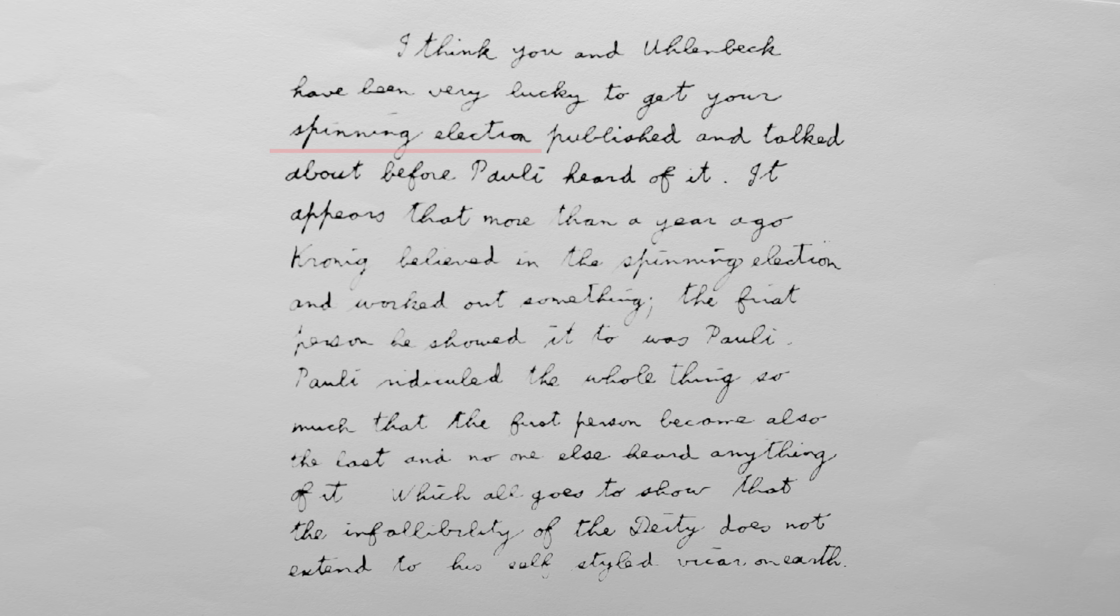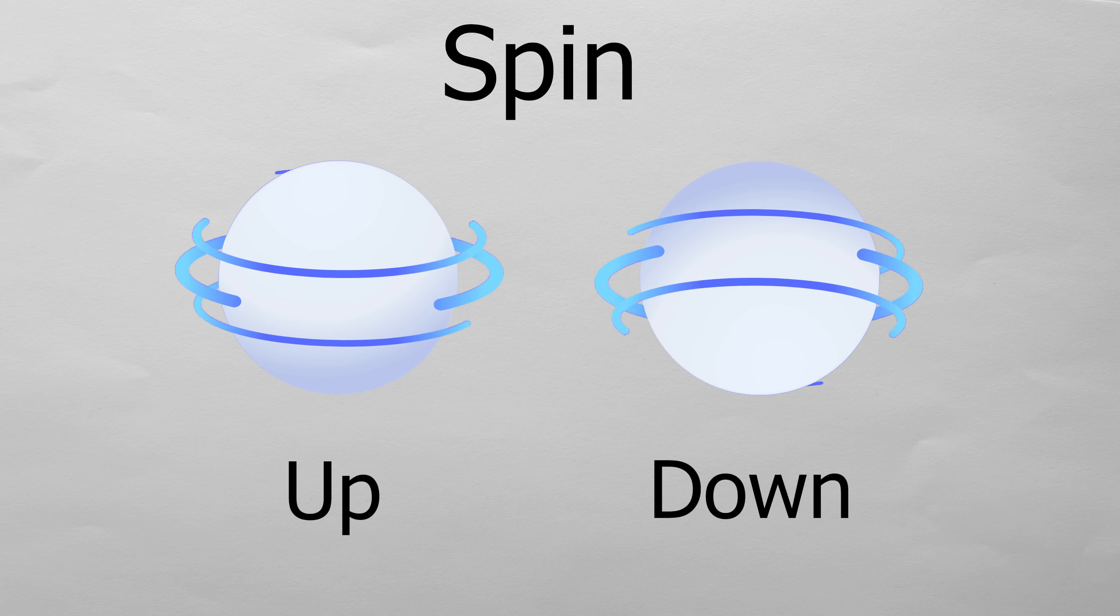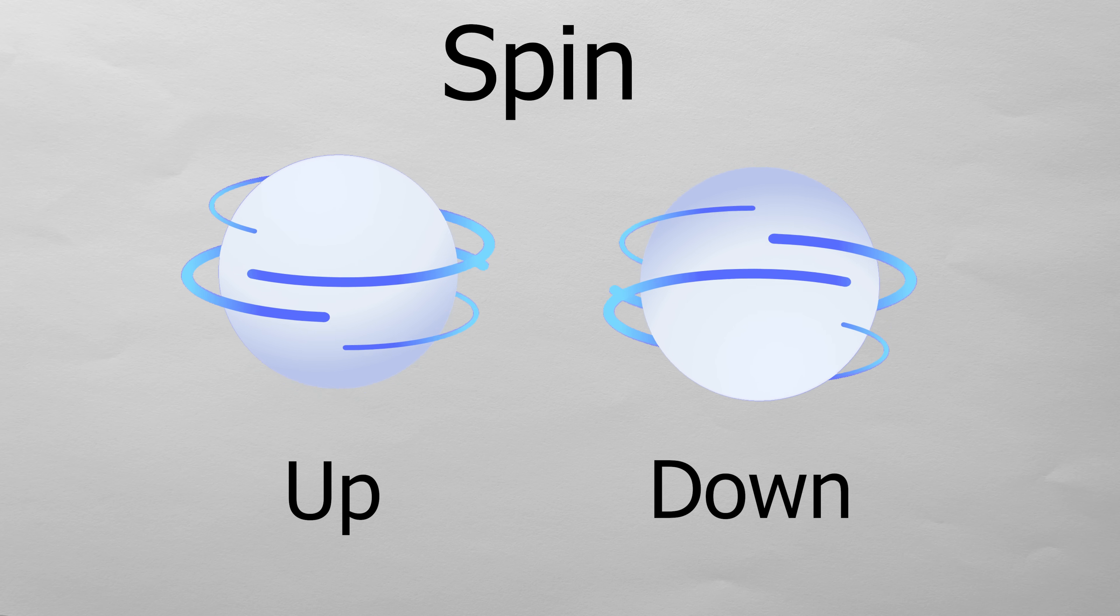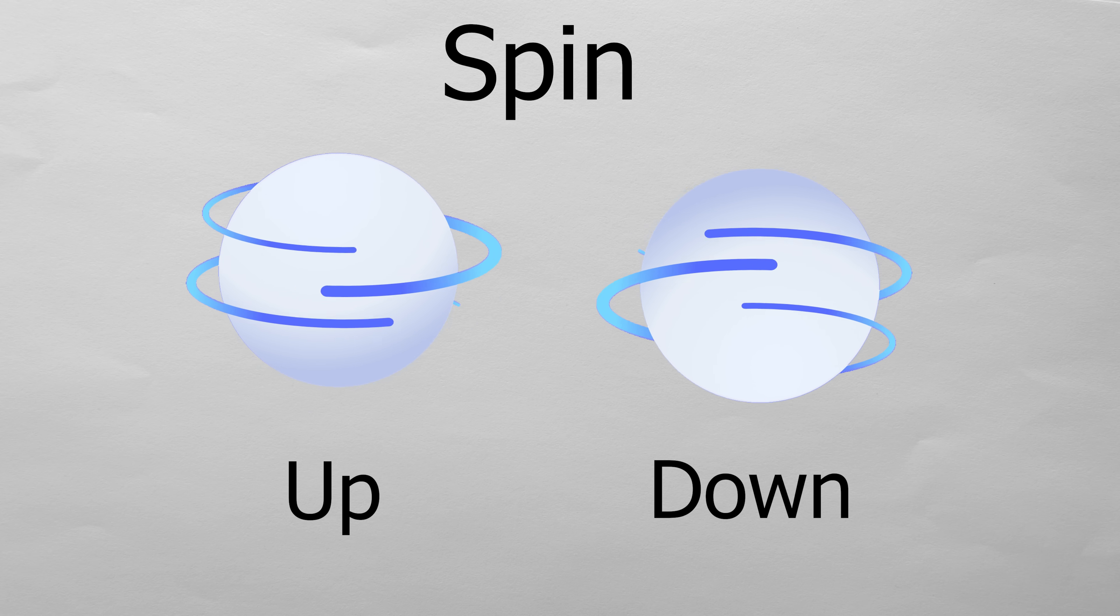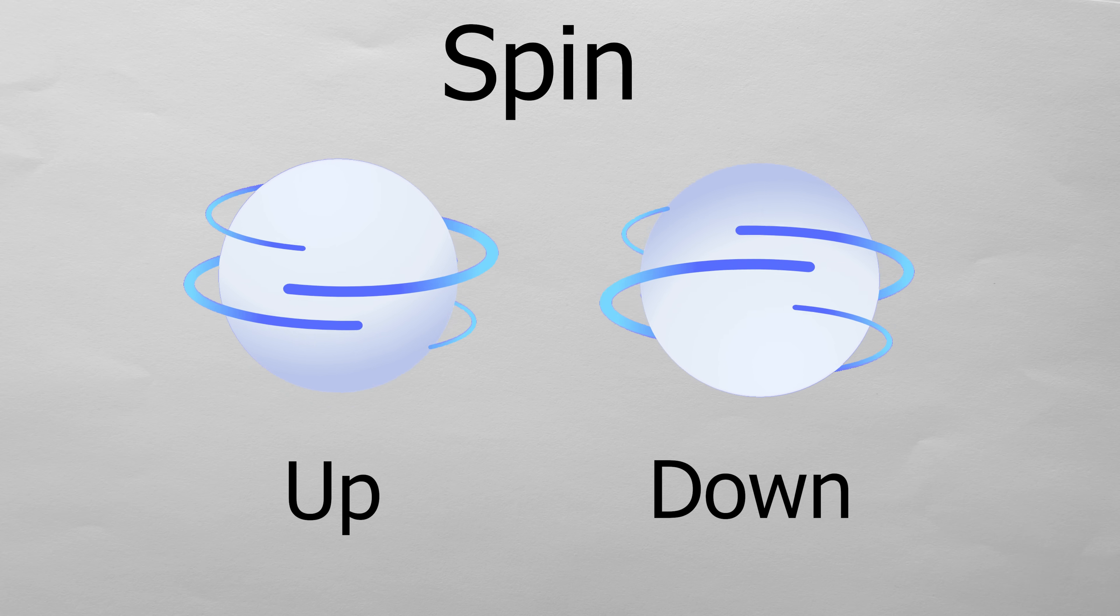They coined the term electron spin, and suggested that electrons were always spinning, either in one direction, spin up, or the other, spin down. This property was intrinsic to electrons. You can't take away their spin. It's built into their very nature.